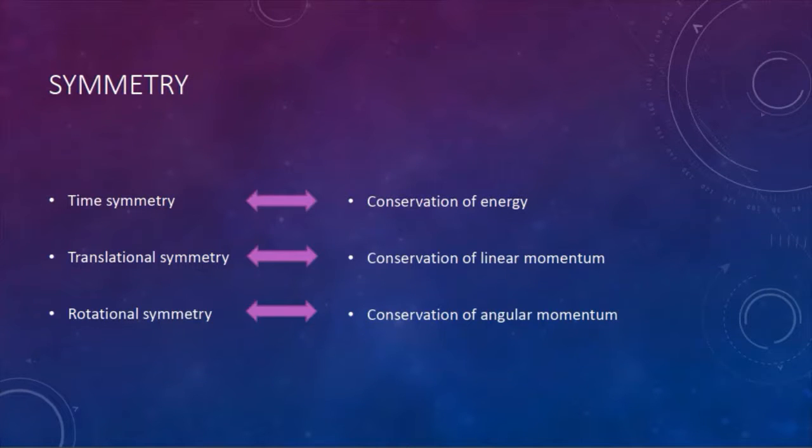In physics, there are symmetries, and symmetries are none other than saying that there are quantities that are invariants, that are conserved even though there are changes in the state of the object. So time symmetry leads to conservation of energy, symmetry of translation leads to the conservation of linear momentum, rotational symmetry is the conservation of angular momentum.